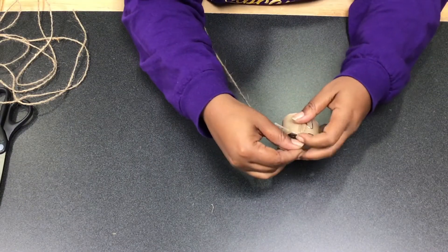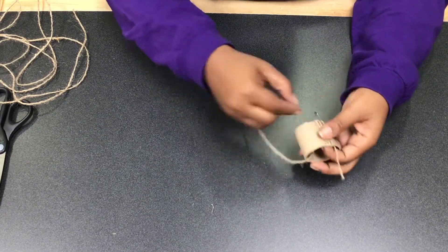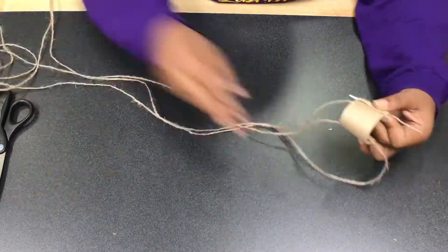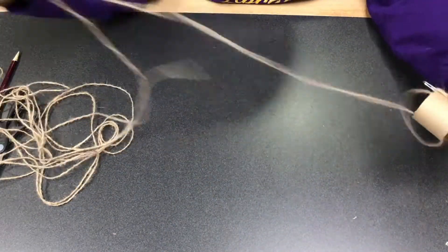Paperclip the twine to the roll. You can also glue the twine to the inside of the toilet paper roll and start wrapping the twine around it.